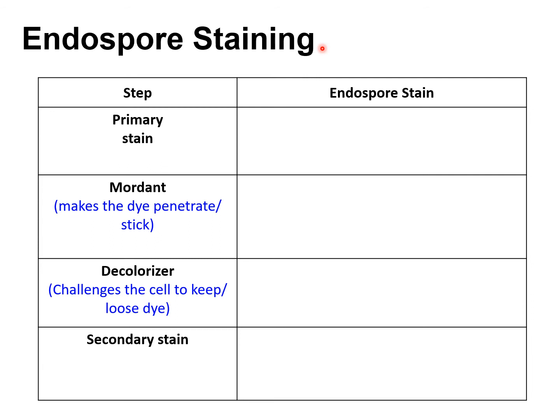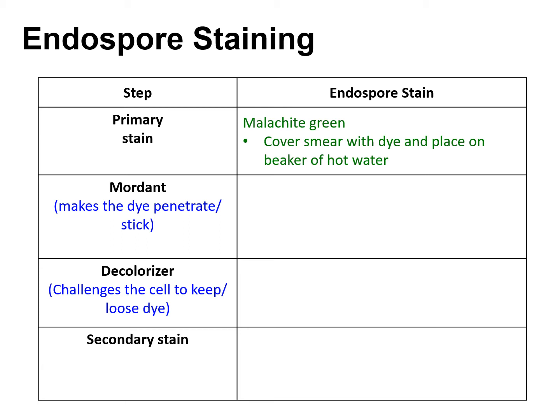To perform an endospore staining procedure, the very first step is to prepare a bacteria smear. On a cleaned, dried slide, add a drop of water or broth, mix in your bacteria, smear it over the slide, let it air dry, heat fix, and then start adding your primary stain. The primary stain is malachite green, which will stain both the cells and the endospore green. The endospore has a really thick, tough outer layer to withstand harsh conditions.